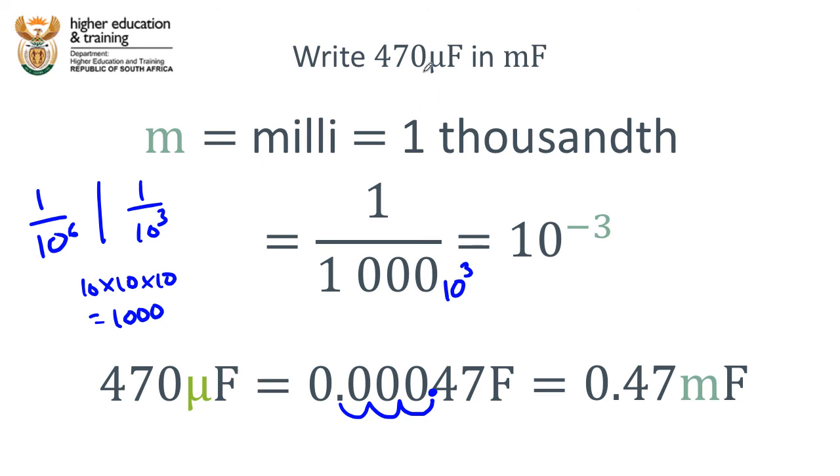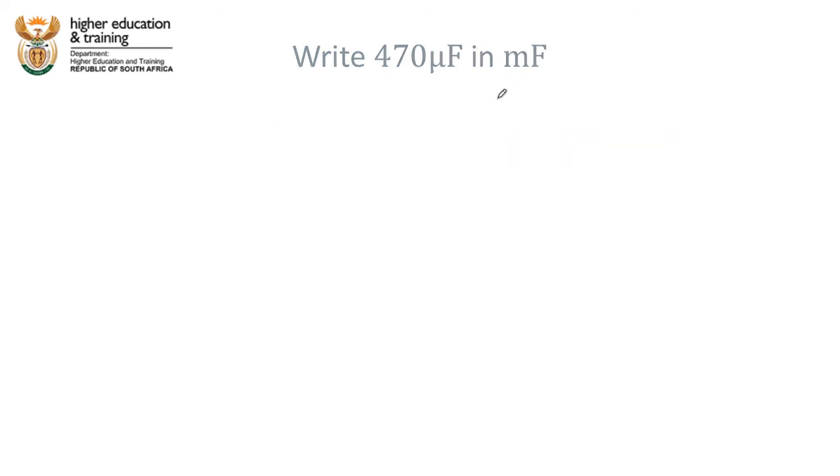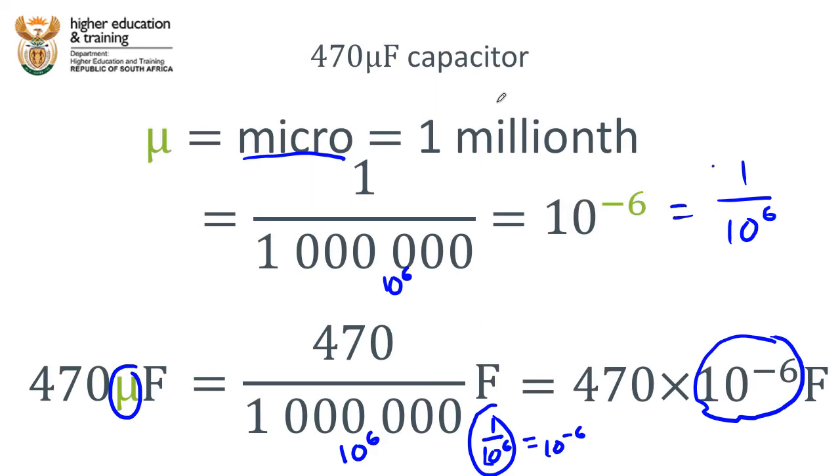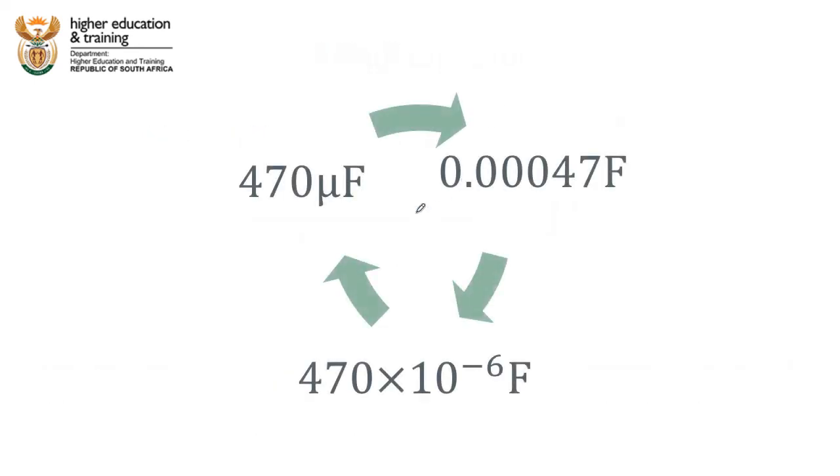We're going to do more of these unit-to-unit conversions in another video. But just all that you need to get from this video is that this unit here, for example, micro, means 1 millionth, and 470 microfarads is the same as 470 times 10 to the negative 6 farads. That's also micro, which is the same thing as 0.00047 farads. All of those numbers mean exactly the same thing, and we can use them interchangeably.